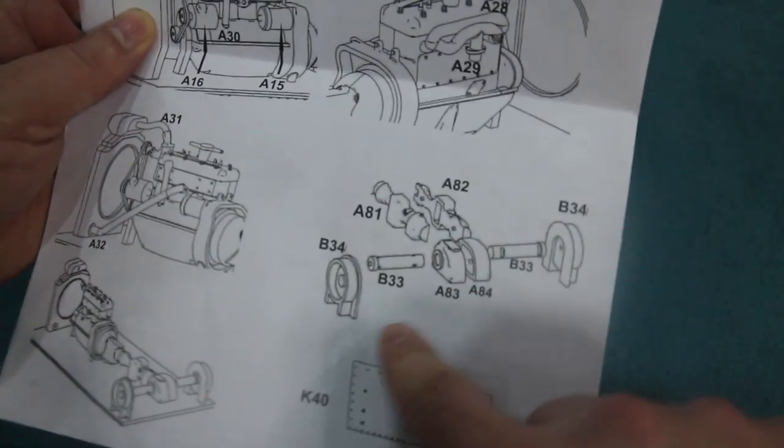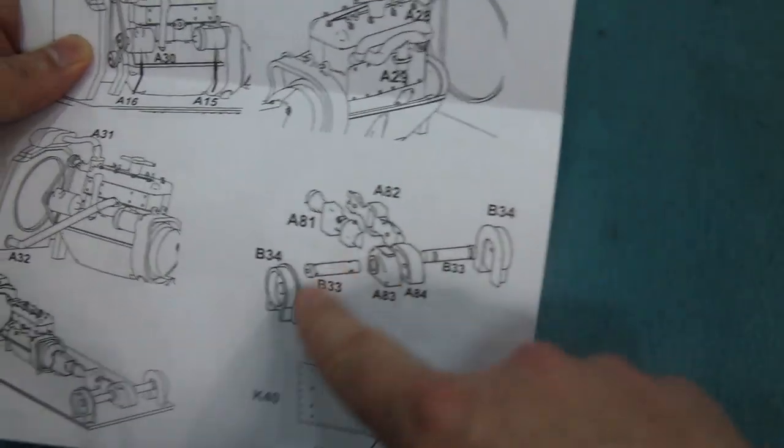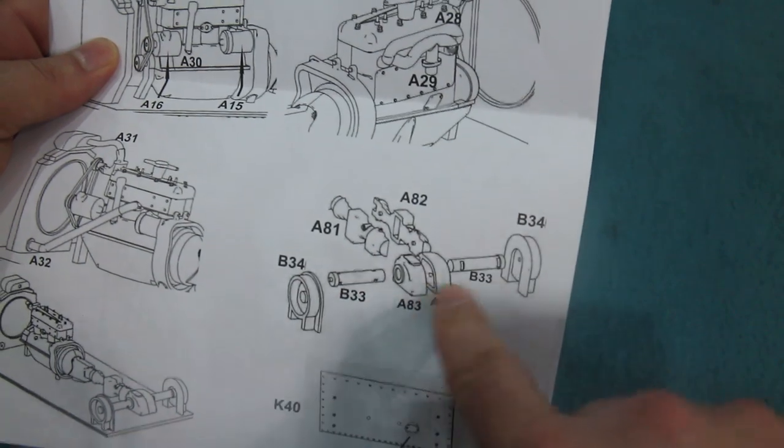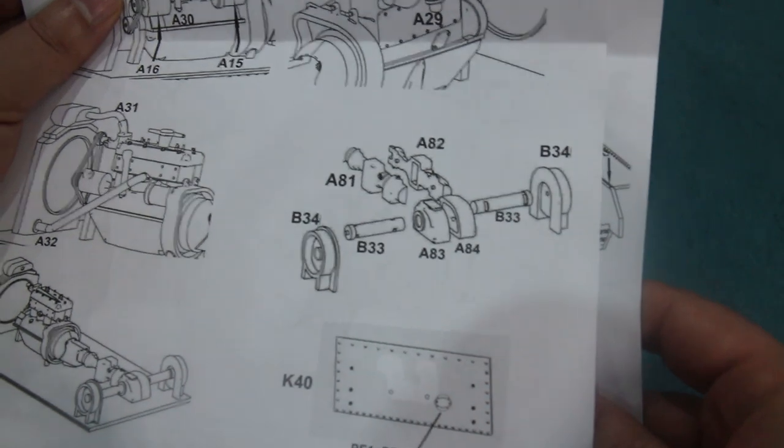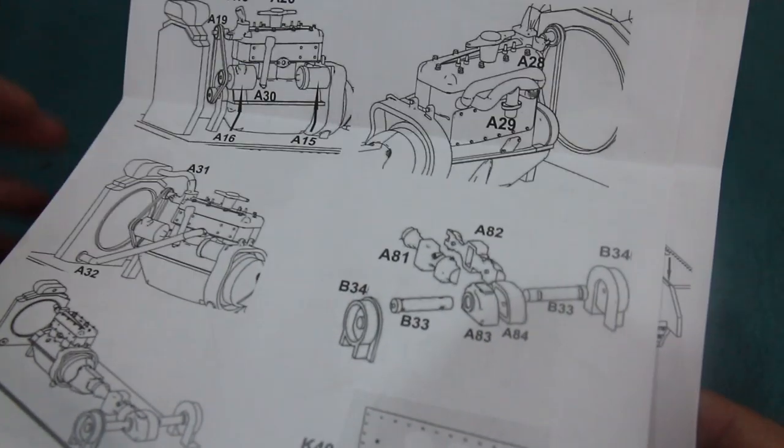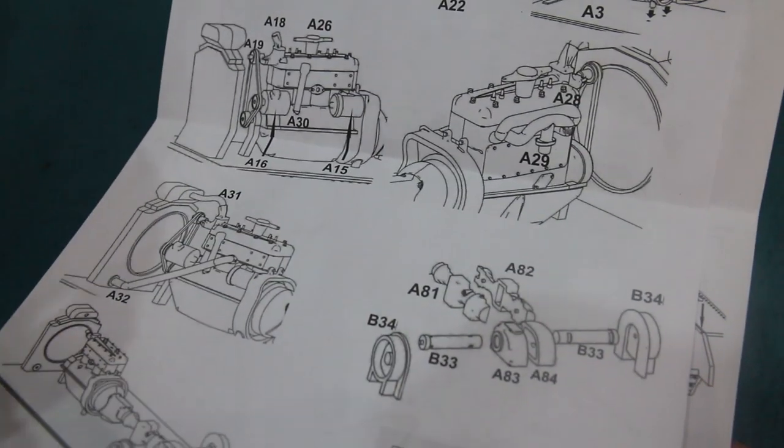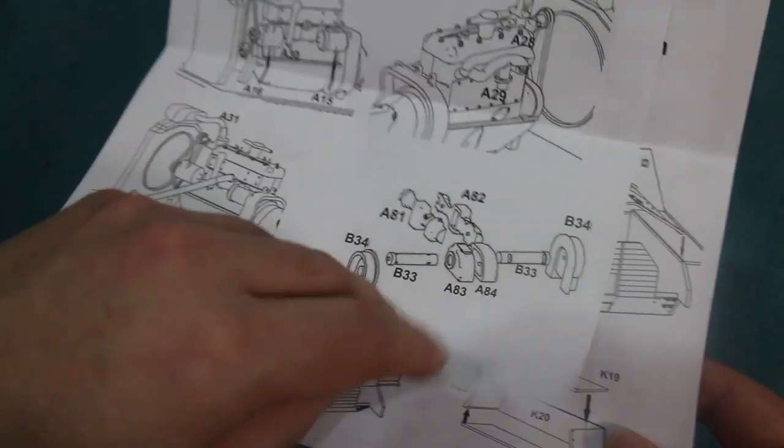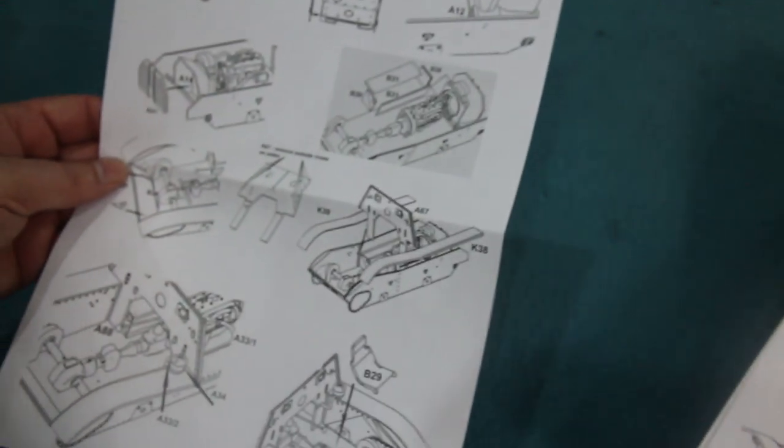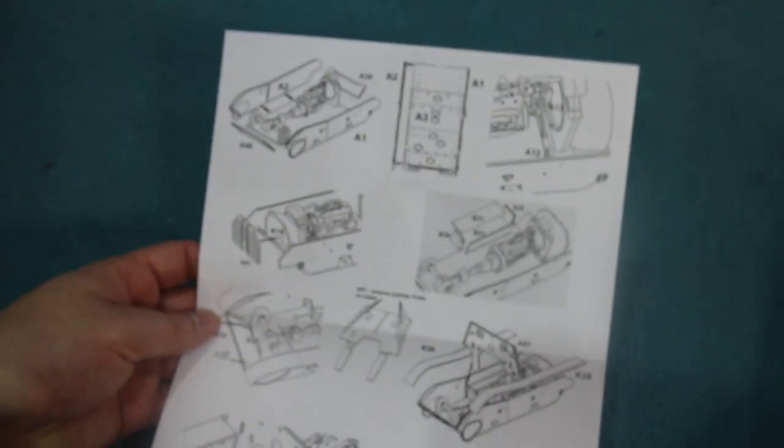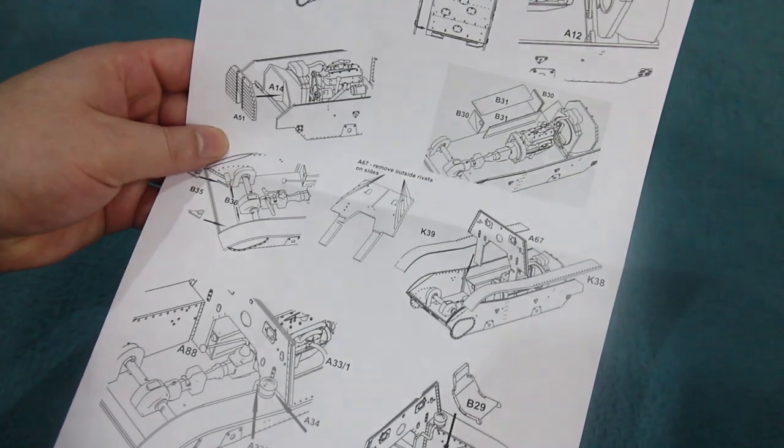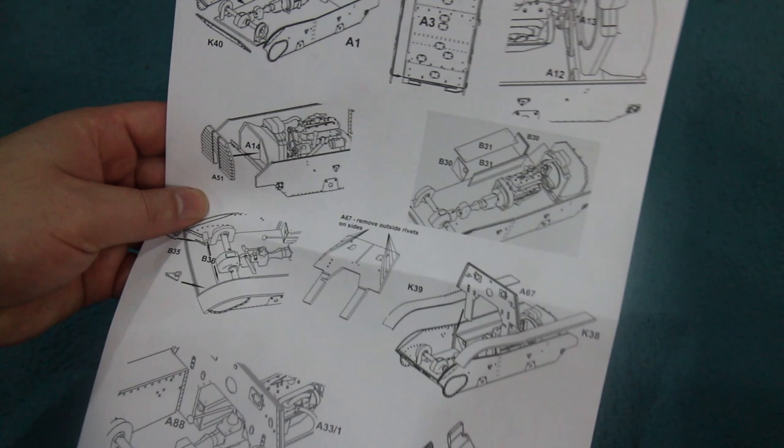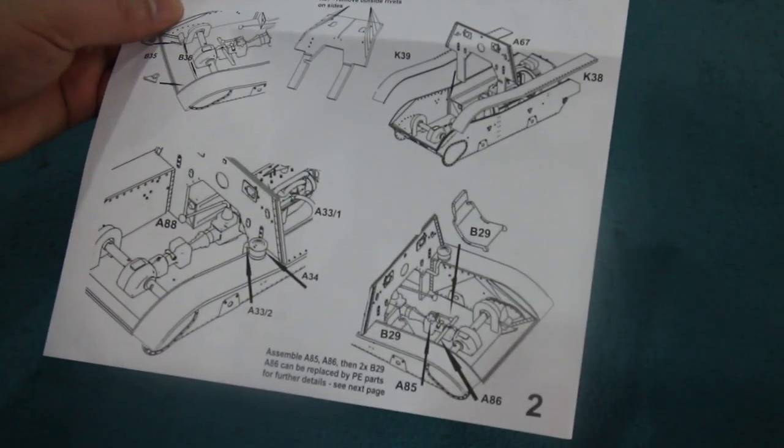Where small parts are involved you get a single step showing all the parts in detail. I really like that. I think that's better than a lot of the larger manufacturers who tend to just show all these bits going together squeezed in around other construction steps. We start off with building the engine and the interior. Yes, this has a full interior and engine for the tractor.